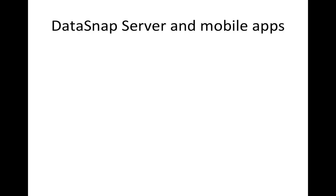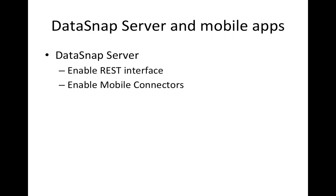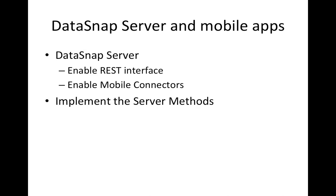In order to allow mobile applications to connect and interact with the business logics on your DataSnap server, there are a few things you need to know. First, you need to enable the REST interface and mobile connectors on your DataSnap server. After that, implement the server methods, which is going to be the business logics on your server side, and generate the proxy classes for one of the platforms supported by the DataSnap connectors.